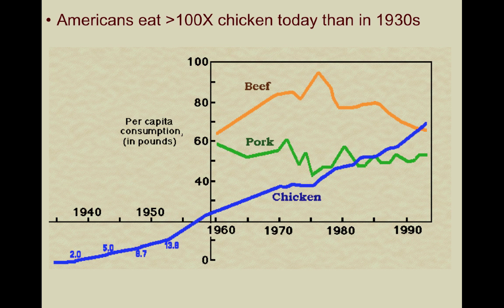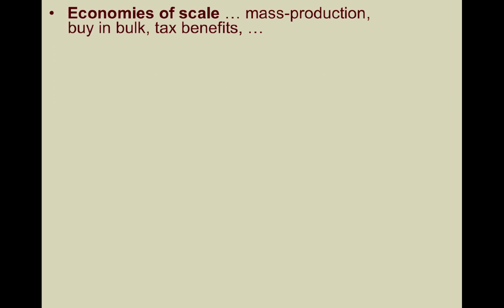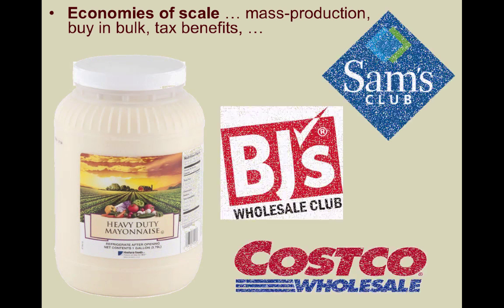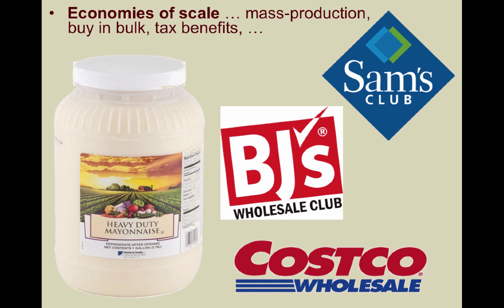One of the major reasons has to do with economies of scale, which refers to a proportionate savings in costs gained by an increased level of production. Companies that mass produce their food are able to buy raw materials in bulk and gain tax benefits from local and state governments, reducing the cost per item produced. This is why if you really need to buy a 10-gallon vat of mayonnaise, your best deal is usually at a big box superstore like Costco, BJ's Wholesale, or Sam's Club. Buying in bulk allows you to save money on packaging and incentivizes companies to give you a better deal per item.